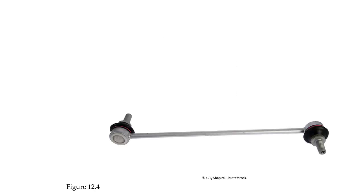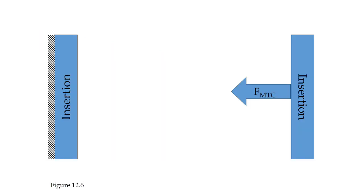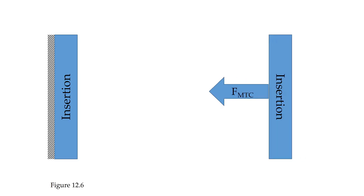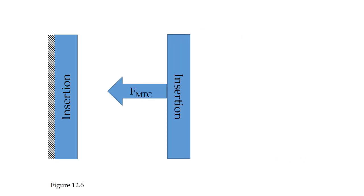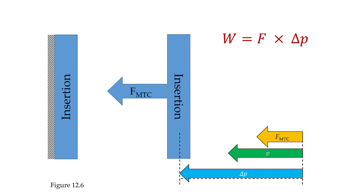The MTC can act like a motor, a brake, a strut, or a spring. In the first case, the MTC produces force, overcomes any resistance, and moves one end closer to the other. The displacement is going from right to left, and if the displacement is from right to left, then the velocity is also from right to left. We already know the force is going from right to left. Because the force and the displacement are in the same direction, the work done by the MTC is positive, and therefore the power is also positive. These are concentric actions.